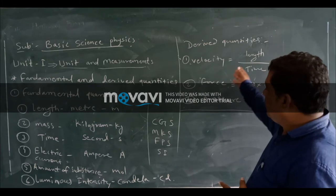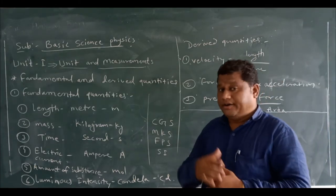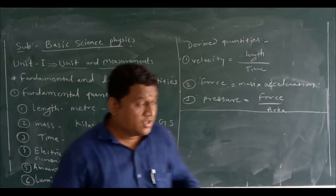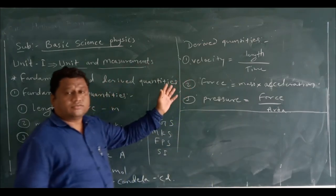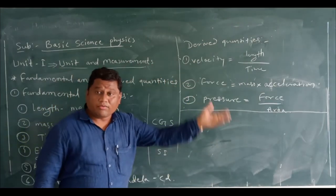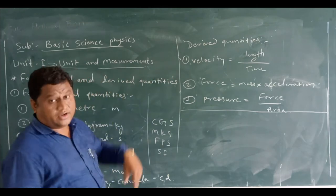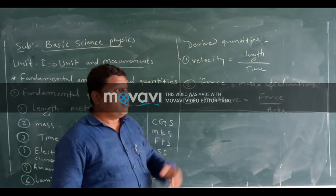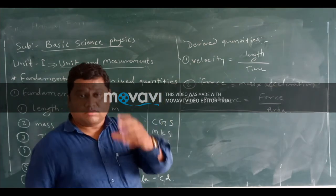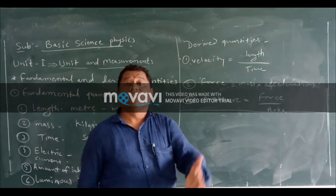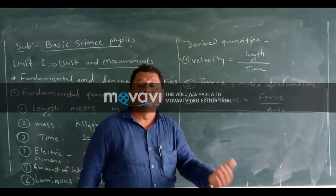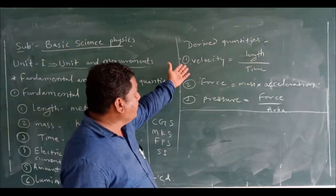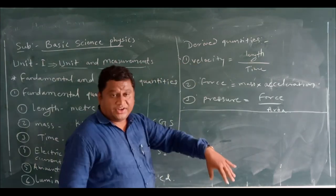Here are derived quantities. The derived quantities are derived from fundamental quantity. Generally we can say it is obtained from fundamental or basic quantity. One or more than one fundamental quantity is used to derive the derived quantities.